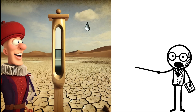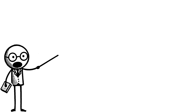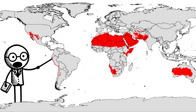But what makes a desert a desert? Extreme dryness. According to the Copenhagen Climate Classification, deserts receive less than 250 millimeters of annual precipitation.